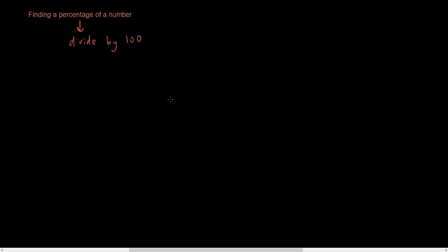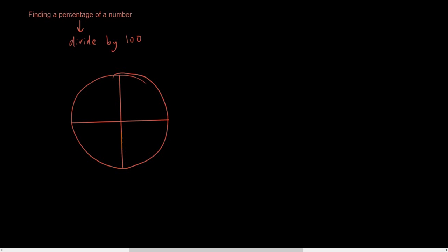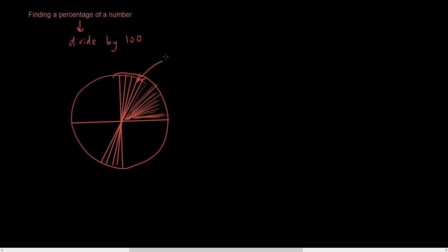So basically, for example, if I have a pizza — I know this is probably a very badly drawn pizza — but let's say I somehow divide this pizza up into a hundred slices. If I keep cutting up this pizza into a hundred slices, then one little slice would be one percent, if there were a hundred slices in this pizza.